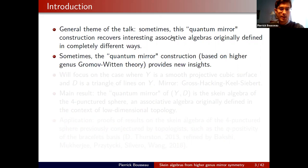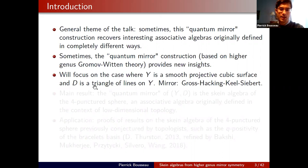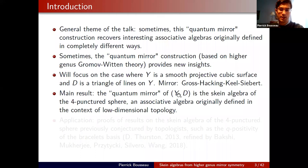We focus on a very particular example where Y is a smooth projective cubic surface and D is a triangle of lines on Y. There is a recent paper by Gross-Hacking-Keel-Siebert giving an explicit description of the mirror as a family of cubic surfaces. The higher genus version of that computation yields a non-commutative algebra which is a so-called skein algebra of the four-punctured sphere — an associative algebra originally defined in low-dimensional topology.